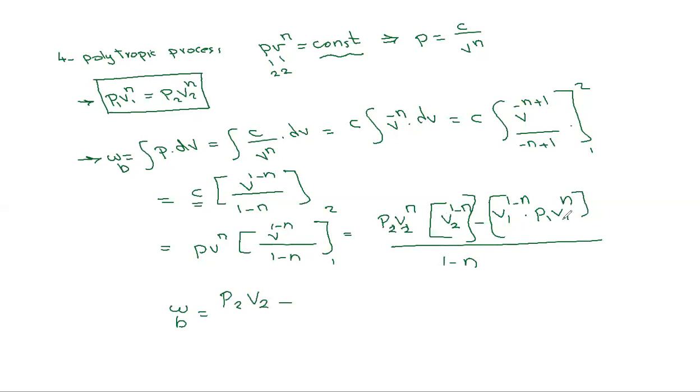When I add the powers, I get P2V2 minus P1V1 divided by 1-n. This is the work boundary due to polytropic process.